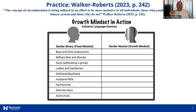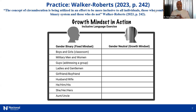Let's do a practice. The concept of circumlocution is being utilized in an effort to be more inclusive to all individuals — those who comfortably fit the binary system and those who do not. We're not asking that we do away with the binary gender system — we're just asking it to be more inclusive. And if you don't know how a person identifies, don't make an assumption. Ask them, or open the door by sharing your own pronouns first.